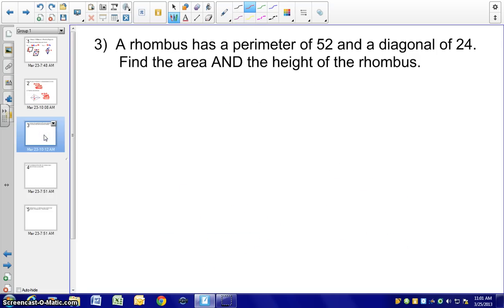Third example, a rhombus has a perimeter of 52 and a diagonal of 24. We want to find the area and the height of the rhombus. So let's go ahead and draw this rhombus and see what information we can use here. Since we know the perimeter is 52, if we divide that by four, we'll get each side to be 13.